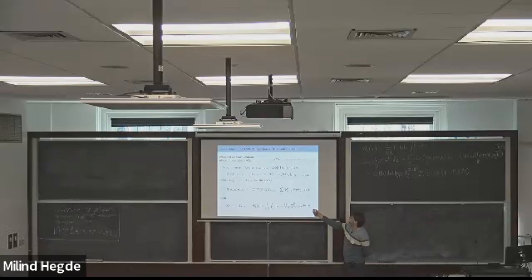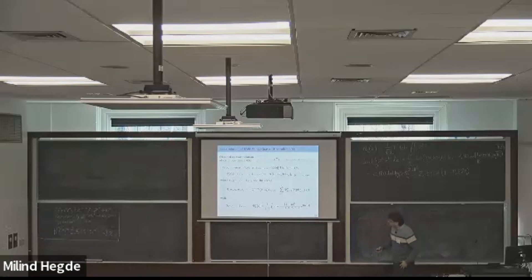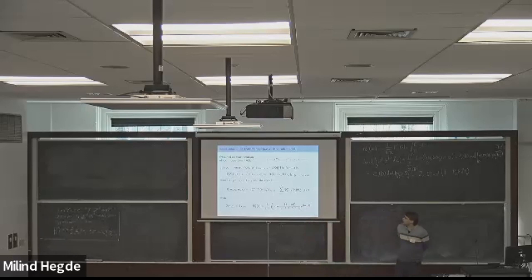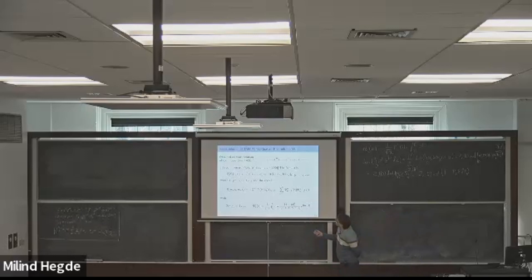The model is the following: particles jump on the integer lattice, there is at most one particle per site. The particles independently try to jump to the right, and the only constraint is that they are not allowed to jump on top of each other. So this particle is allowed to jump but this one is not. One can compute the multi-point distribution function of TASEP.